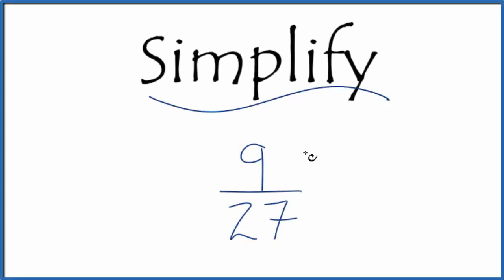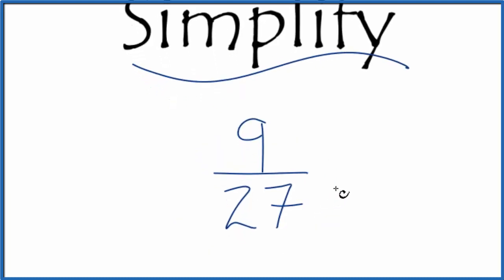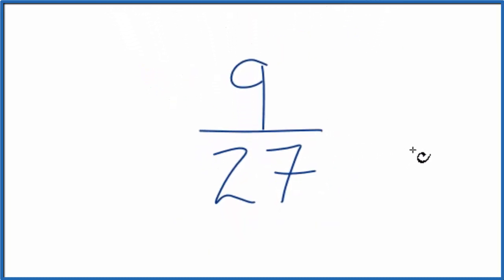Let's simplify the fraction 9/27, and here's how we do it. Basically, what we're trying to do is find another fraction that's equivalent, has the same value as 9/27, but is in lowest terms. So we need to find a common factor.